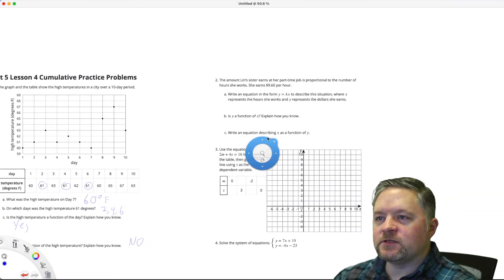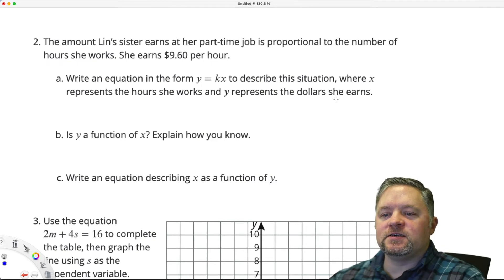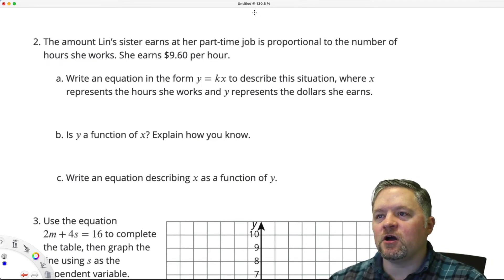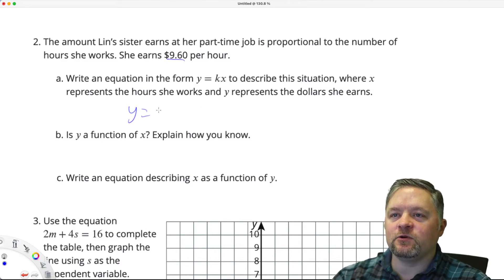Okay, what's next? The amount Lynn's sister earns at her part-time job is proportional to the number of hours she works. She earns $9.60 an hour. Write an equation in the form Y equals KX to describe the situation, where X represents the hours she works, and Y represents the dollars she earns. Y equals, what's our unit rate, our K, our slope, 9.6.